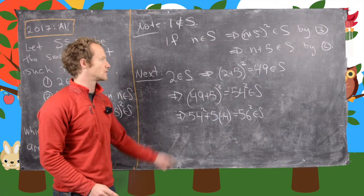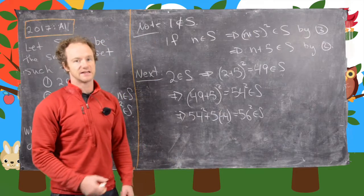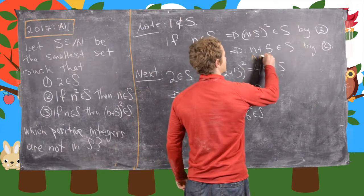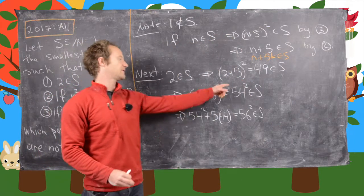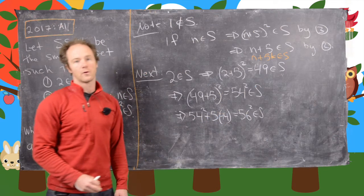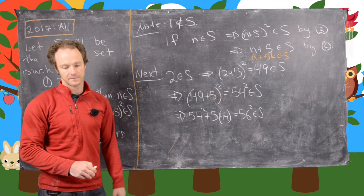So it might seem like we went for a loop there. But notice if N is in S, then N plus 5 is in S. And in fact, that means that N plus 5k is in S because we can just keep doing it. So that means since 54 squared is in S, then 54 squared plus 5 times 44, which happens to be 56 squared is in S.